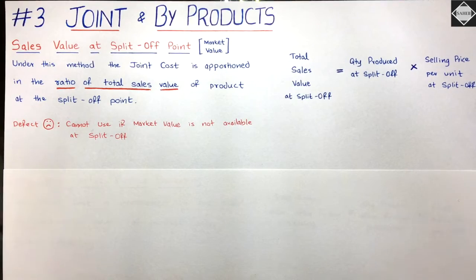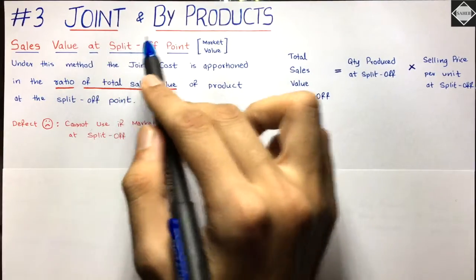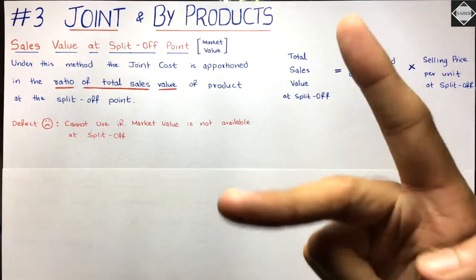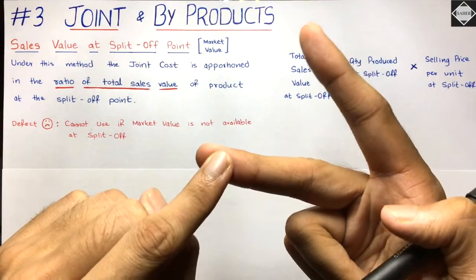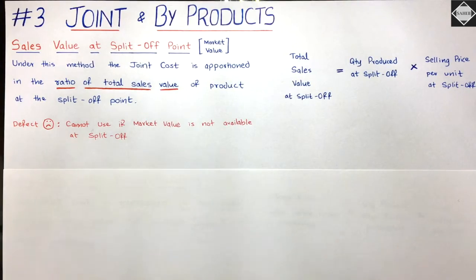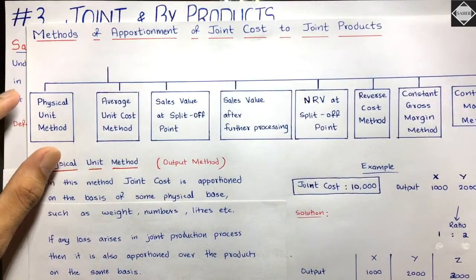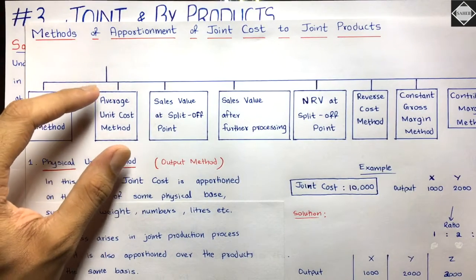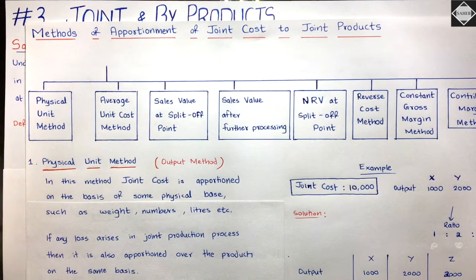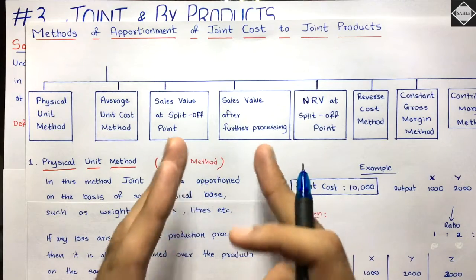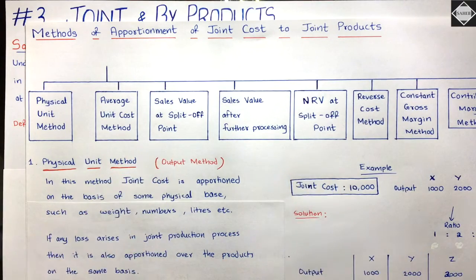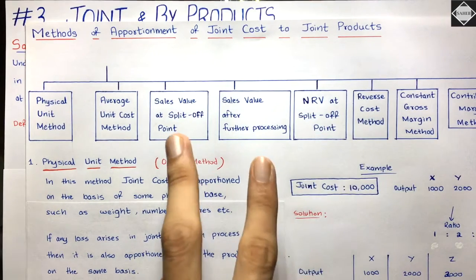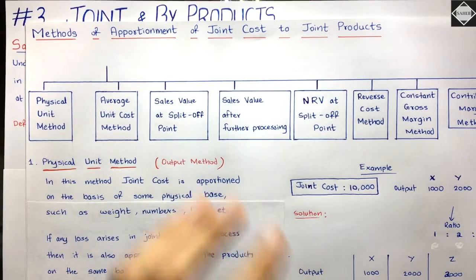Hi everyone, welcome back to Sahab Academy. Today in this third video of the joint products and by-product chapter, we are going to understand the sales value method. There are two types of sales value method: sales value at split off point, and sales value after further processing. We have already seen the physical unit method and average unit cost method in the previous two videos. Both of these will be covered in this video along with a practical problem.